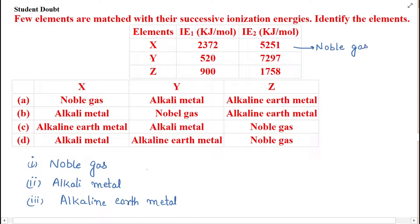Now second element is Y. In this case the first ionization energy is low and the second ionization energy is very very high. We know that alkali metals normally have one valence electron.